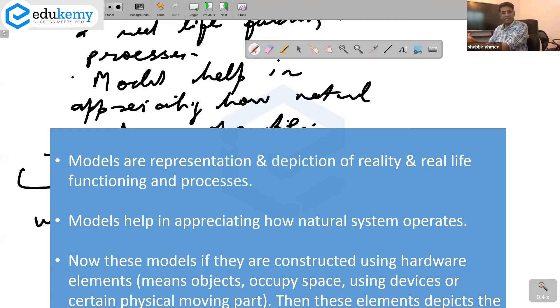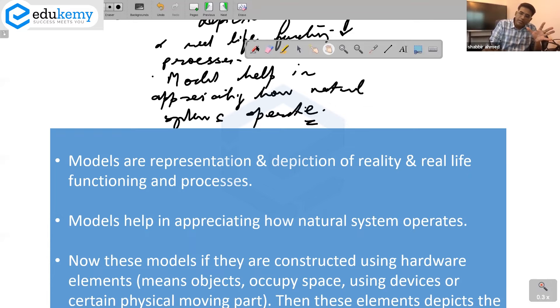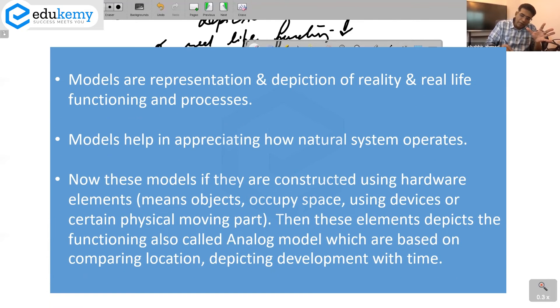I've put it in some place. This model is using devices - machines that can operate some valves, there's a pipe that fills up the tank. When I have a model that is physically depicting, this model is physically depicting. Such type of models are also called analog models. They will be based on comparing locations, comparing developments through time.